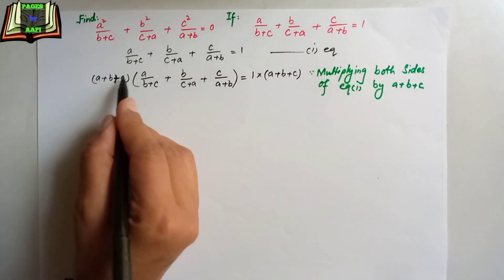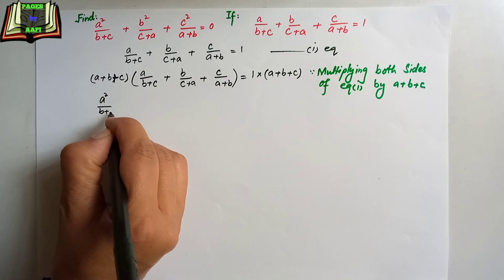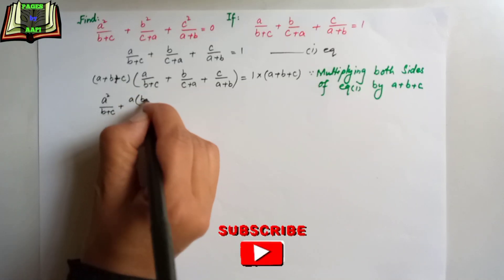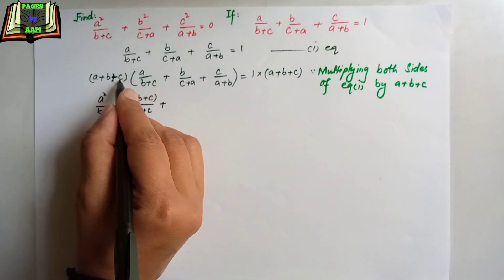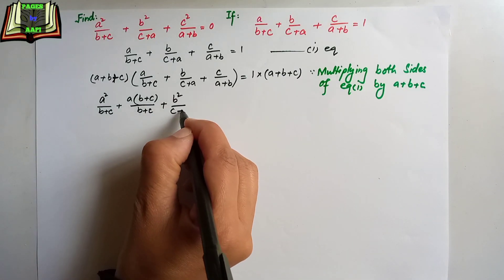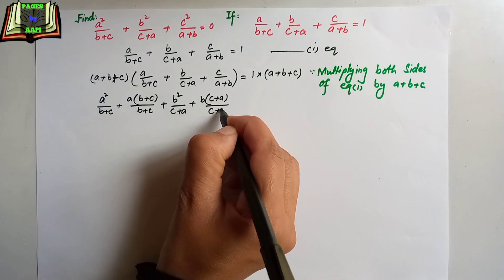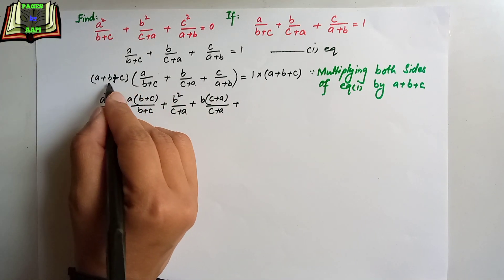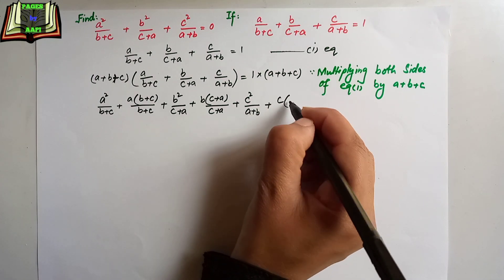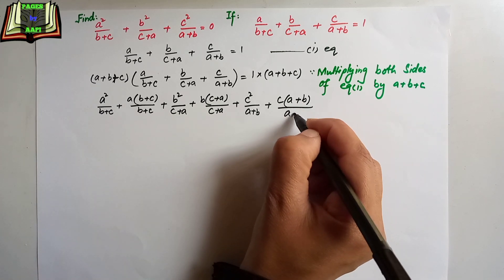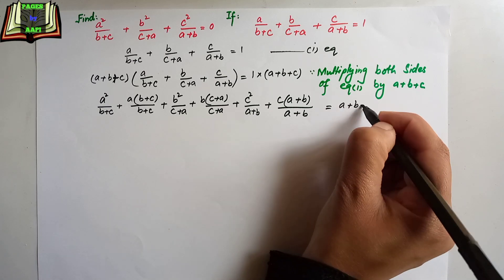Now let's see how we multiply this. a into a first, then a into (b+c): giving a²/(b+c) + a. Then b into b and b into (c+a): giving b²/(c+a) + b. Then c into c and c into (a+b): giving c²/(a+b) + c. On the right side we have (a+b+c) × 1, which is (a+b+c).